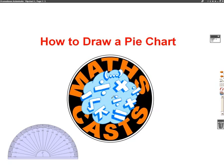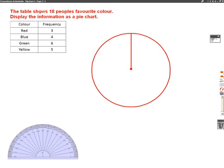Hello, we're going to do a Mathscast now on how to draw a pie chart. So, let's have a look at a question. The question says the table shows 18 people's favourite colour. Display the information as a pie chart.